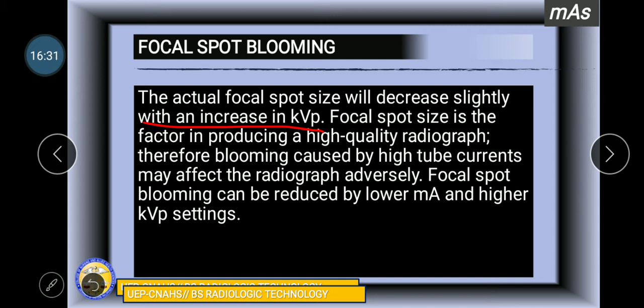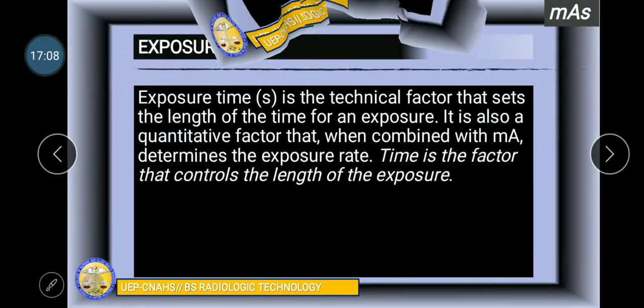When there is focal spot blooming caused by high tube currents, it may affect the radiograph adversely. The detail of the image produced by x-ray photons won't be good. Focal spot blooming can be reduced by lower MA and higher KVP settings.